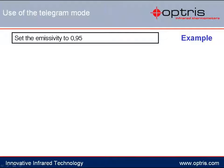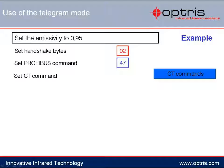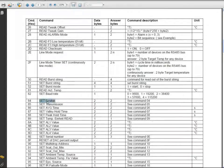Let's look at an example. In this case, we will change the emissivity of the temperature sensor to 0.95. The first step is the sending of a handshake byte — in our case, this byte has the value 02. The second byte is the PROFIBUS command 47, which informs the temperature sensor that another command will be sent. The third byte includes the actual command specifying which settings will be changed. Looking at the command list, to change the emissivity of the sensor, command 84 is needed.